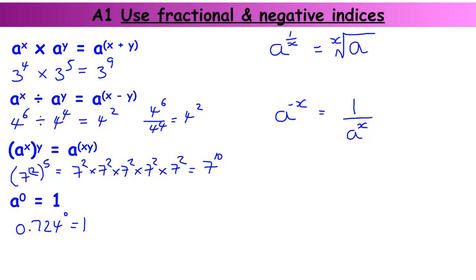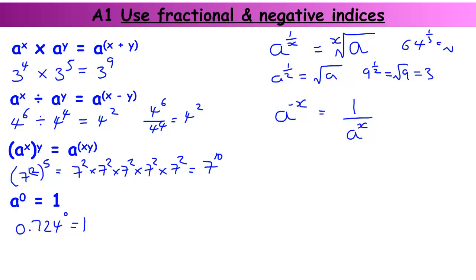And then we've got fractional powers. a to the half is just the same as the square root of a. So if I had 9 to the half, that would be the square root of 9, which is 3. If I was doing a different power, so 64 to the power of a third, that would be the cube root of 64, which is 4 — because 4 times 4 times 4 is 64.